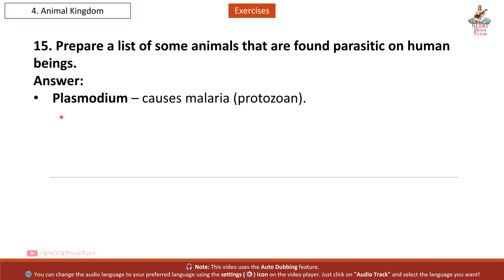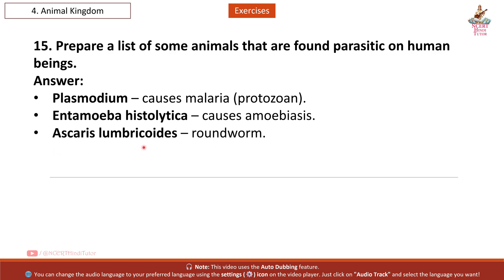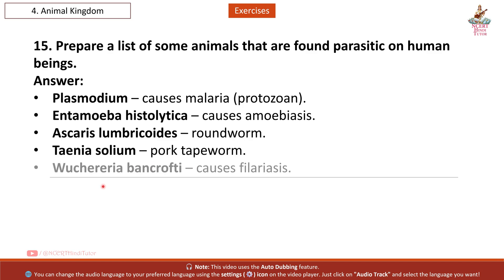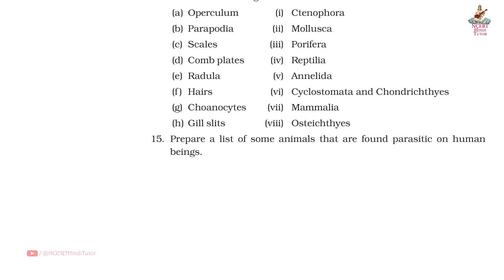Question 15: Prepare a list of some animals that are found parasitic on human beings. Answer: Plasmodium — causes malaria (protozoan); Entamoeba histolytica — causes amoebiasis; Ascaris lumbricoides — roundworm; Taenia solium — pork tapeworm; Wuchereria bancrofti — causes filariasis; Ancylostoma — hookworm; Pediculus humanus — human lice; Dracunculus medinensis — Guinea worm.